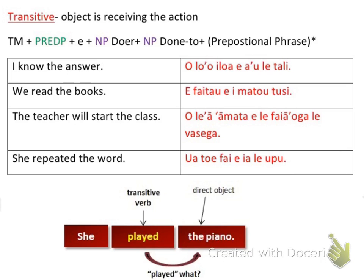We read the books. Depending on how you say it, the tense changes. In this case we're doing a habitual tense — we read the books as a habit. So that's a. Then my predicate phrase — the verb is read, no adverbs — faitau. Then I'm indicating the doer who's doing the reading — that's we — e i matou. Then the thing receiving the action is the books — the noun phrase done-to.